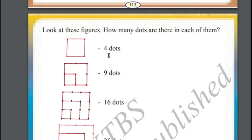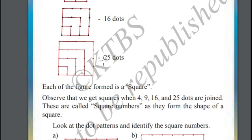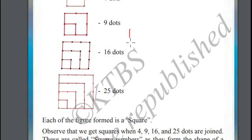Observe the numbers: 4, 9, 16, 25. These are some of the examples of square numbers because they resemble the shape of a square.